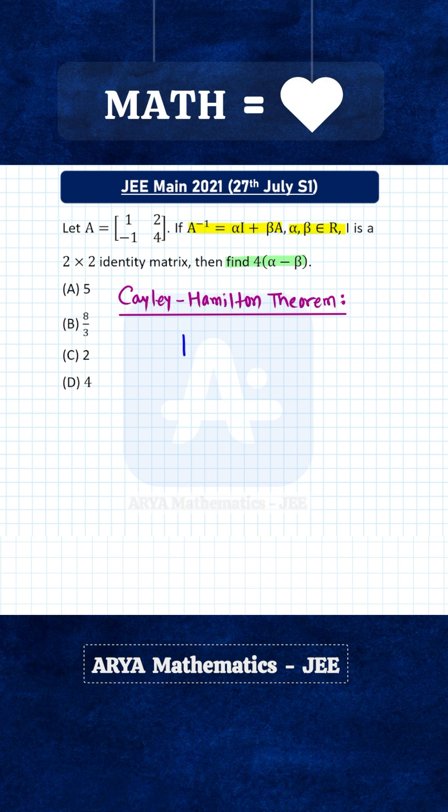The general formula to write the characteristic equation for any square matrix is |A - λI| = 0. That means from diagonal elements we subtract λ and then equate the determinant to 0.